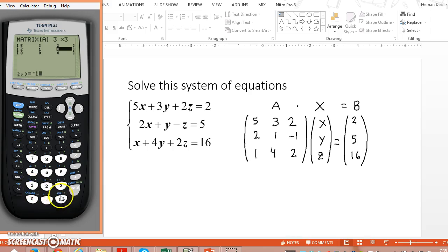Make sure to use this button, not this one, when you have a negative number. It's negative 1, and then you have 1, and then you have 4, and then you have 2. So that's my matrix A.